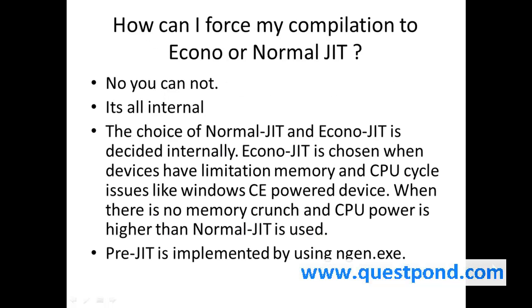One more connected question is: How can I force my compiler to use EconoJIT or Normal JIT? The first thing is you cannot. It is internally decided by the compiler. To use Normal JIT or EconoJIT is all internal. For example, if you are using some Windows CE powered device or mobile device where there is a memory crunch, it will switch from Normal JIT to EconoJIT. By default it tries to use Normal JIT. If it finds a lot of memory crunch, it uses EconoJIT. For PreJIT you can make a choice using ngen.exe and compile your code into full machine code. But EconoJIT and Normal JIT is all internally decided by the .NET compiler itself.